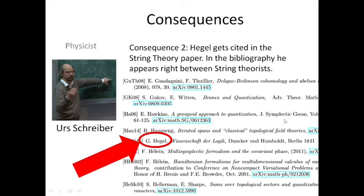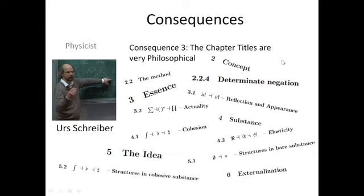So we now have a string theory paper which is citing Hegel and which is using Hegel in the metaphysics. The third consequence is we have a string theory paper in which the chapter names have very weird titles. Schreiber decided to give the chapter names in the paper fake philosophical names like Concepts or The Method or Determinate Negation. And Determinate Negation is a very Hegelian thing, like it's the difference between coffee without cream and coffee without milk in Tichacki and Portland. So we now have chapter names named after Hegelian dialectical concepts. Then we have Essence and Reflection and Appearance, Substance, The Idea, Externalization. These are chapter names in this 1000 page string theory paper by Schreiber.